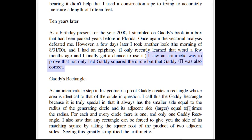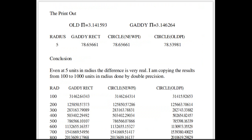But the fact that René didn't understand any of Gaddy's math did not stop him from offering his own arithmetic proof that the so-called Gaddy's pi is correct. He does this by using a computer program that generates the area of the Gaddy rectangle and compares it to the area of the circle using traditional pi and the new and improved Gaddy's pi.